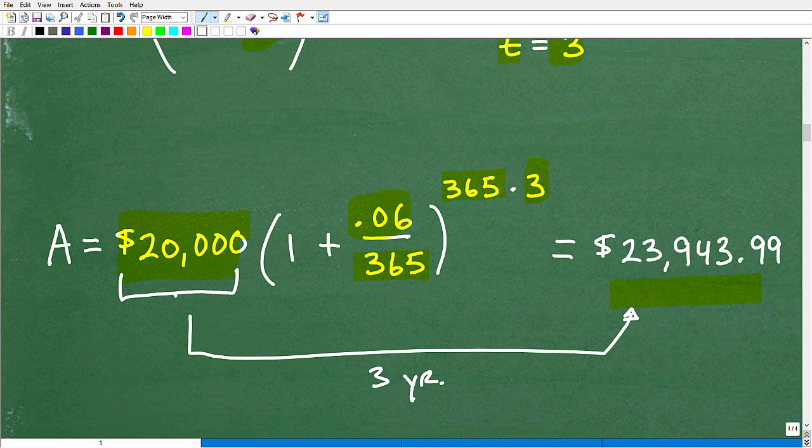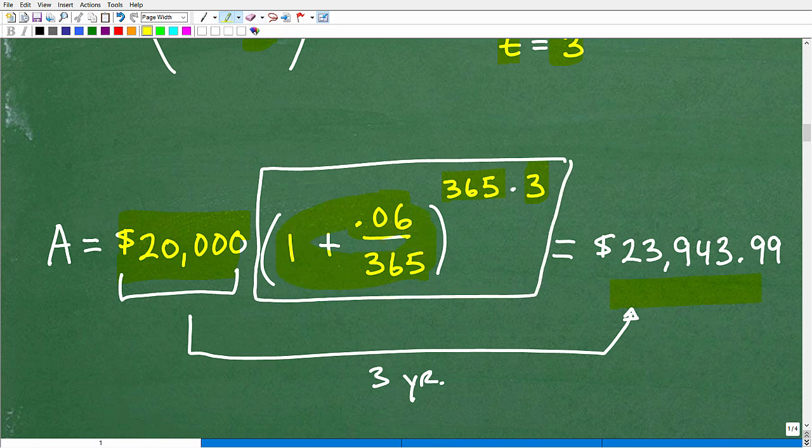Another thing that students will mess up is just basic order of operations. You can't multiply until you take care of these powers. When you're doing this problem, work on doing your parentheses, get this number, write that down, then get this number, go into your calculator very carefully, evaluate this, and then finally multiply it by the 20,000 and you'll get your answer.